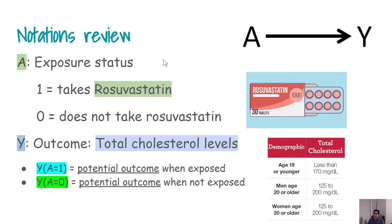To explain that concept, let us consider an example where we have an exposure variable. A person who is taking rosuvastatin is an exposed person, and in that case we define A equal to one. If a person does not take that drug, we call that A equal to zero — meaning that person is in the control group. Our outcome is total cholesterol level, and rosuvastatin is a drug that helps reduce total cholesterol level.